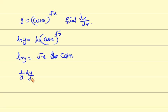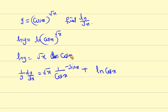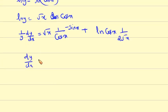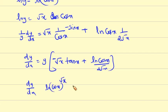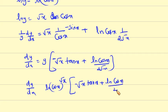Differentiating both sides using the product rule: 1 by y, dy by dx equals root x into 1 by cos x into minus sin x plus ln cos x into 1 by 2 root x. Therefore dy by dx equals y into minus root x tan x divided by x plus ln cos x by 2 root x.